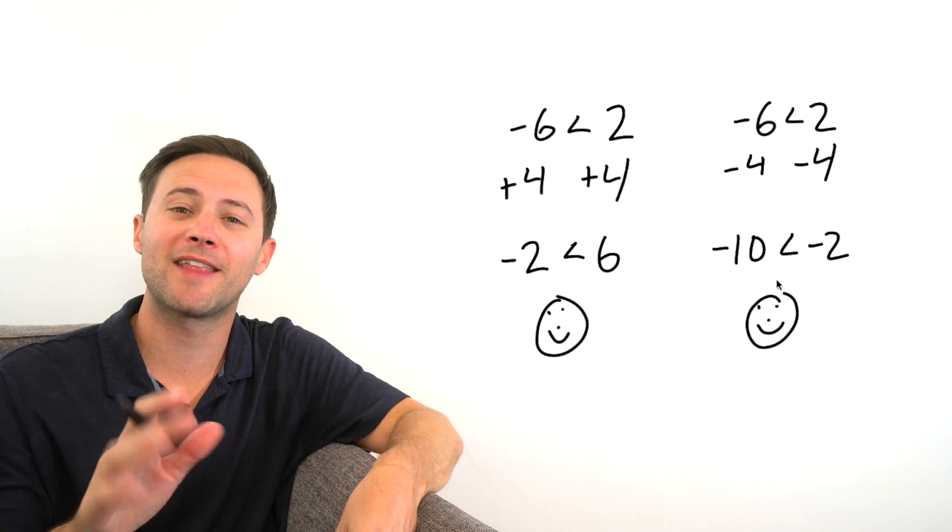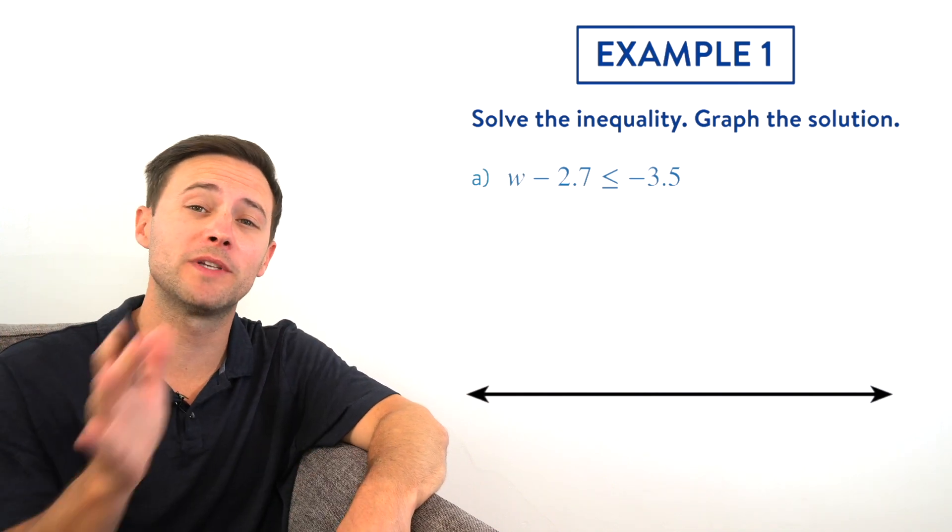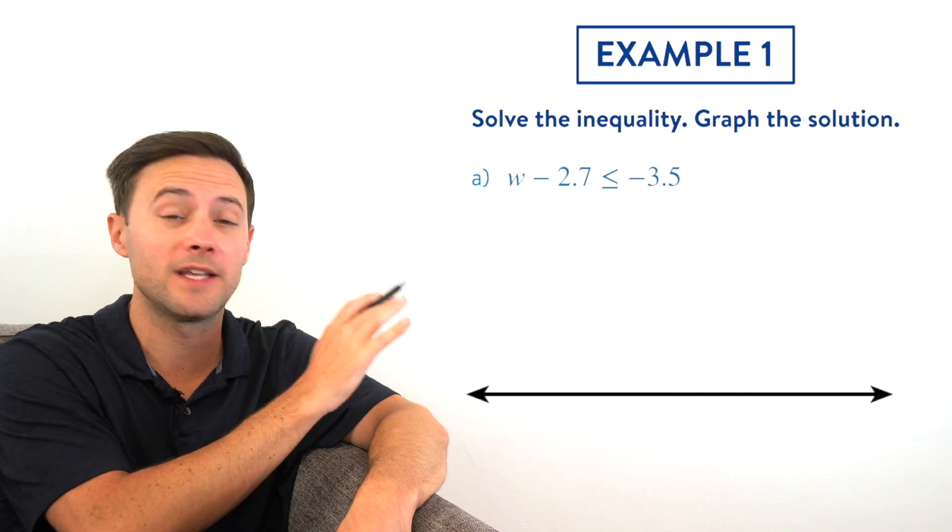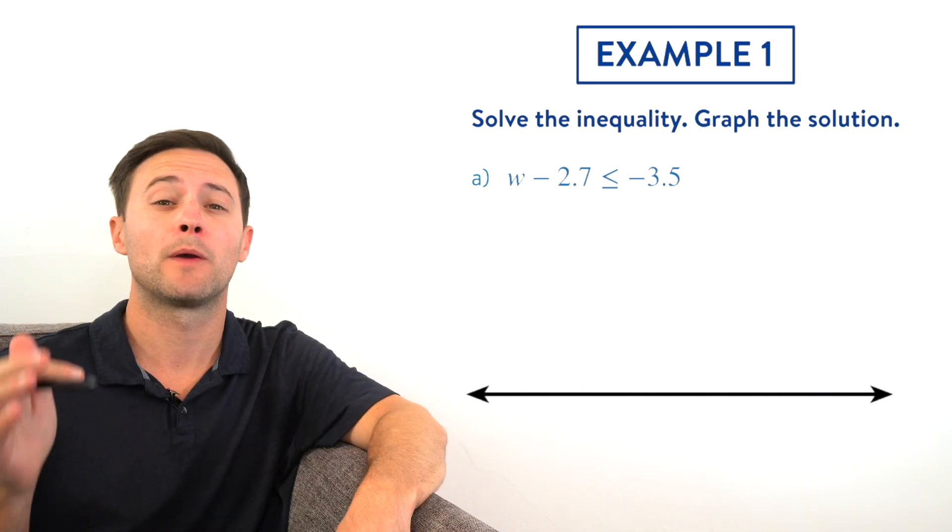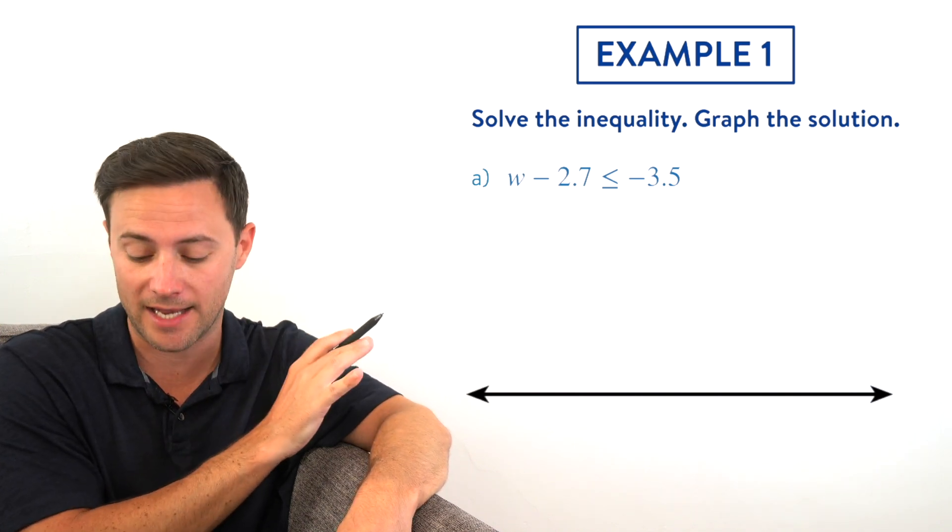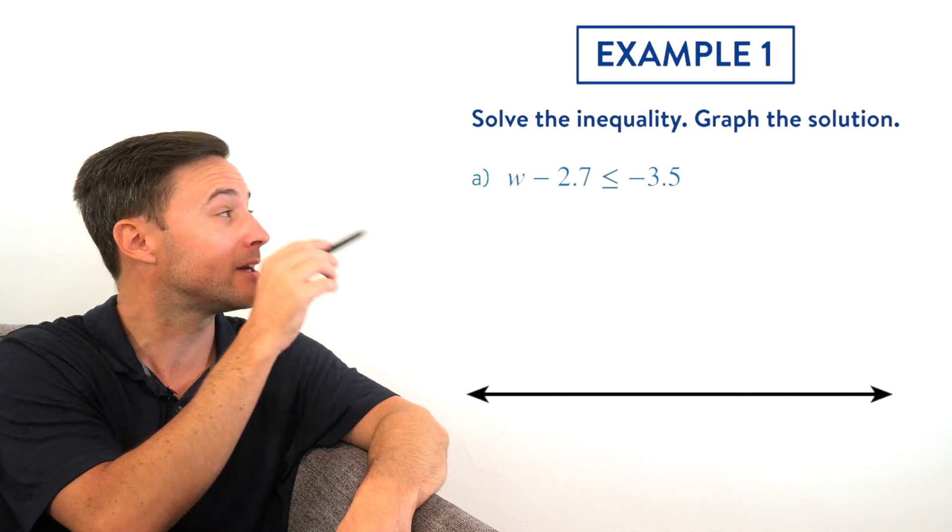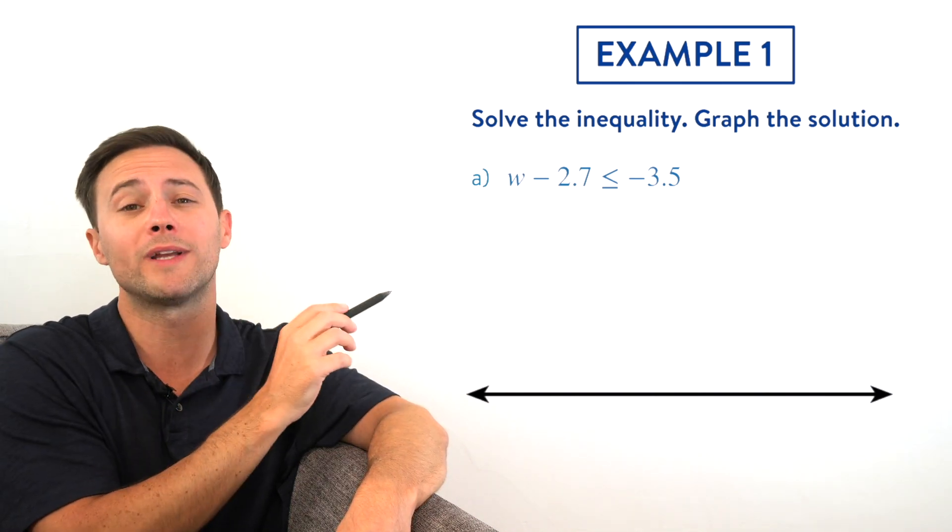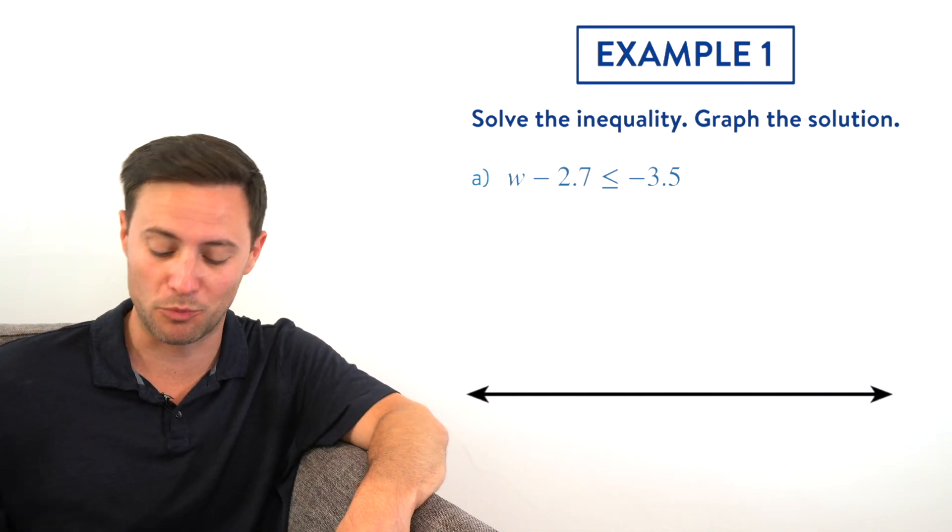Now that we understand that, let's try the first example. Solve the inequality and graph the solutions. Just like we said before, we're going to solve these inequalities the exact same way we would an equation, which means we're going to try to get that w alone on the left side. To do that, we need to use inverse operations. So to get rid of that minus 2.7, we would do the opposite—we need to add 2.7.